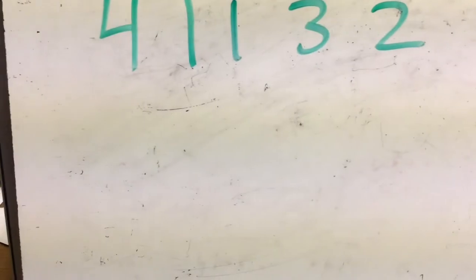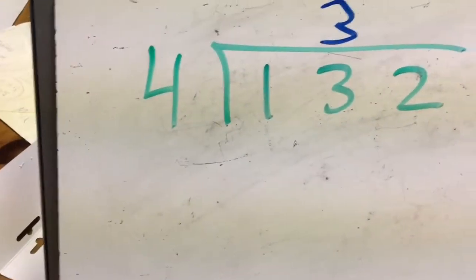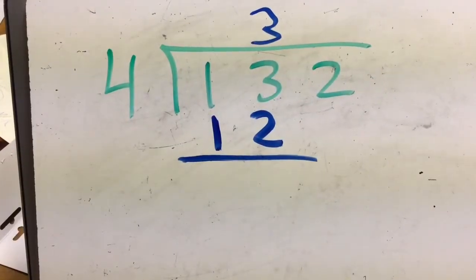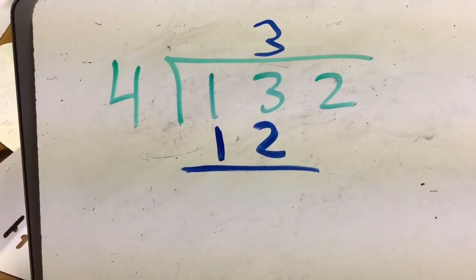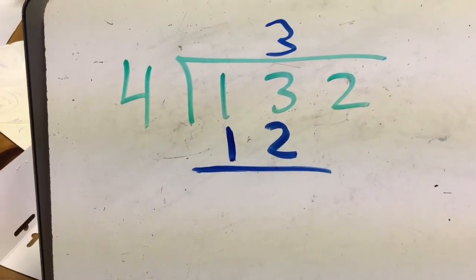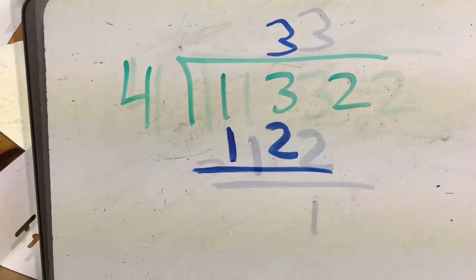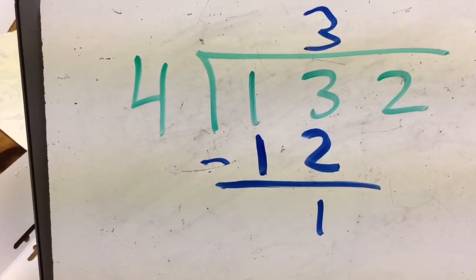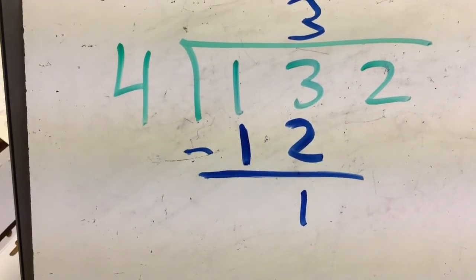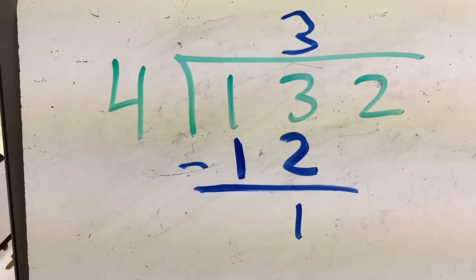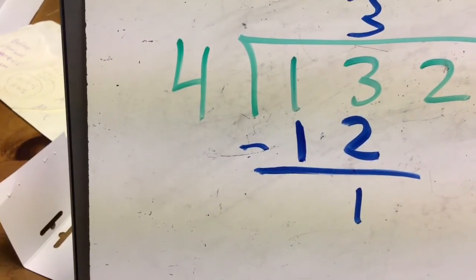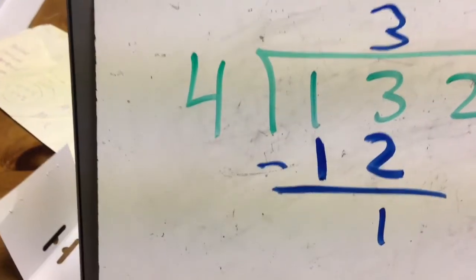What I'm going to do next is take three times four and write it below my thirteen. Three times four is twelve — that's as close as I can get using fours to thirteen without being too big. Next I'm going to subtract to see how short I am: 13 minus 12 is one. There's one left over from that group, but I'm not done because that's just part of my 132.